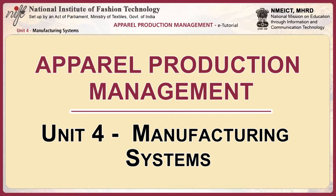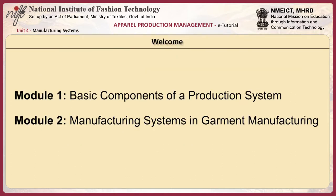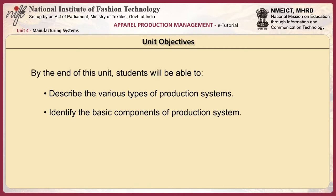Unit 4. Welcome to the unit on manufacturing systems. In this unit, you will review various manufacturing systems and their components. This unit comprises two modules and a final review section that invites you to reflect on what you have learned. By the end of this unit, students will be able to describe the various types of production systems and identify the basic components of a production system.